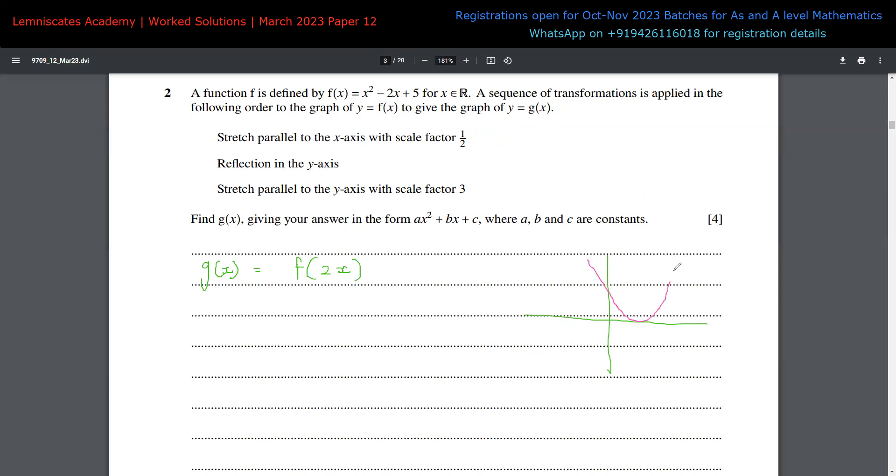What does the reflection in y-axis mean? For example, let's assume that this is a quadratic equation which is looking something like this. So what is a reflection in y-axis? It simply means that this equation is now going to look like, or this curve is now going to look like this. This y-axis is acting like a mirror.